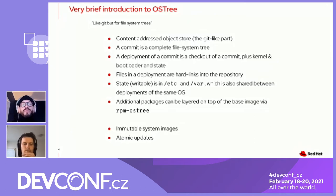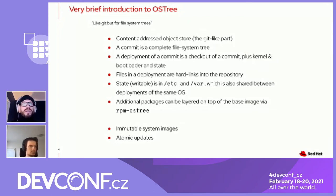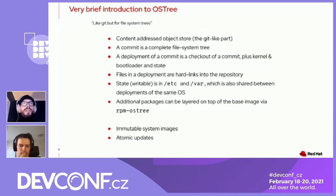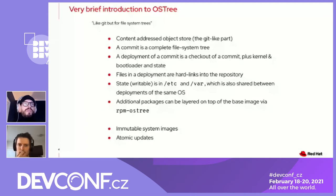If you want to actually use such a commit, you have to create a deployment, which is basically, as in Git, a checkout of that commit, plus a kernel that is contained in the commit and a bootloader. You also need some state, which is contained in etc and var. In this checkout, to save space, you don't actually create copies of the files — instead you create hard links into the repository. So all the files on your file system are actually hard links into the same file in the repository.